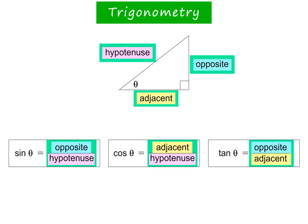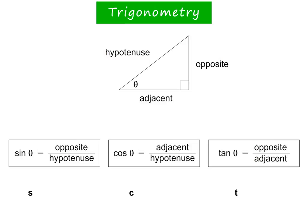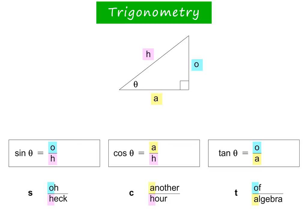This information is extremely important in trigonometry. Let's see how to remember it. The order is always sine, cos, tan — or S-C-T. Then you need to remember: Oh heck, another hour of algebra. From now on, I will use the letters O, A, and H for opposite, adjacent, and hypotenuse. These are the first letters in 'oh heck, another hour of algebra'.